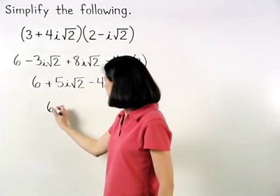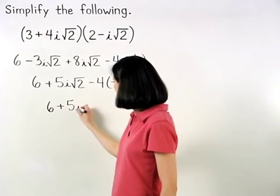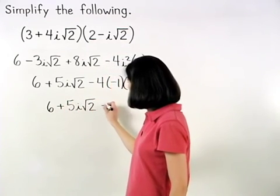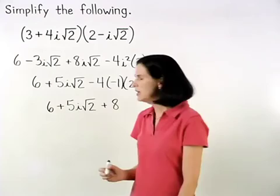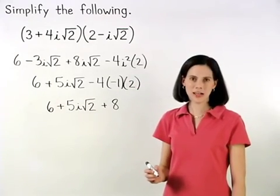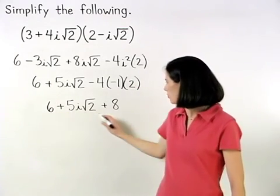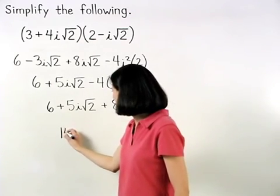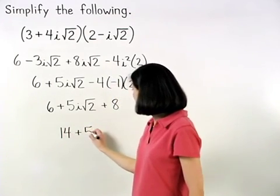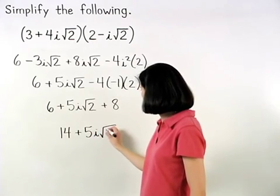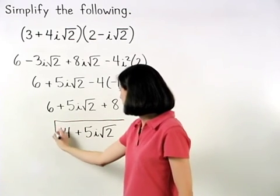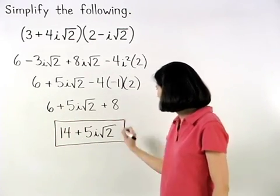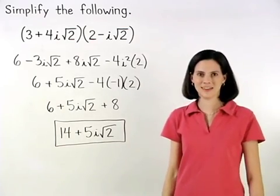So we have 6 plus 5i root 2 plus 8. And finally, combining like terms, 6 plus 8 is 14. So we have 14 plus 5i root 2.